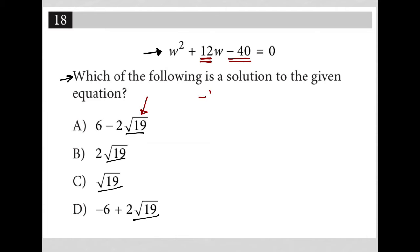Now, the quadratic formula tells me that I'd have negative b plus or minus the square root of b squared minus 4ac all over 2a.